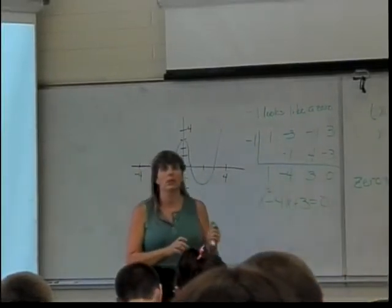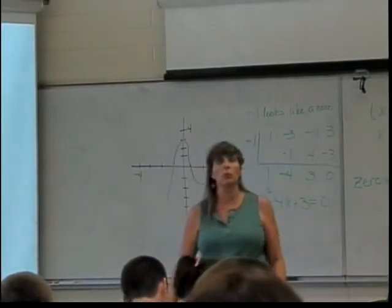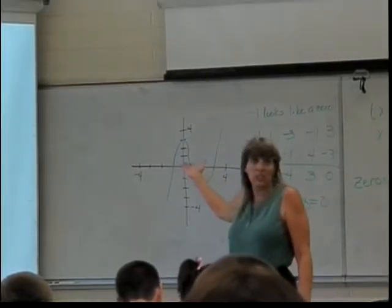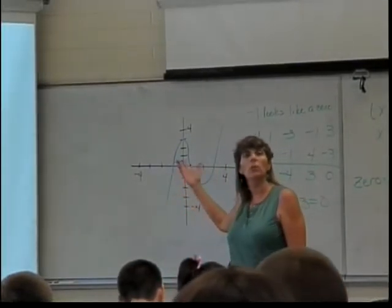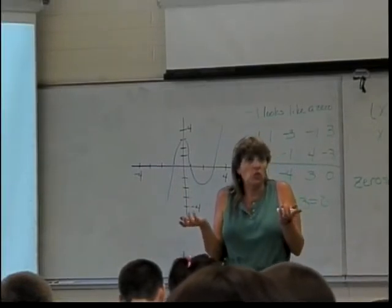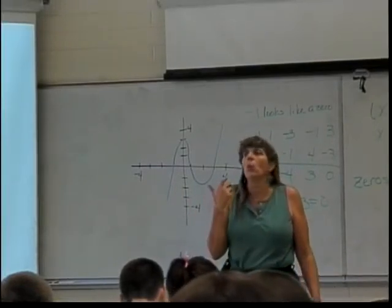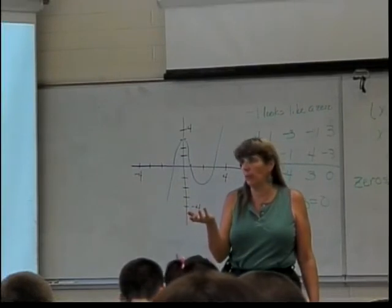Because you have to do this algebraically. You have to be able to do this process algebraically. This was an easy one where we could actually see them all. What's going to happen on the next one is there will be 2 that you won't be able to tell where they are for sure. And we need exact answers for our problems.